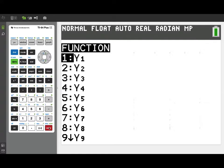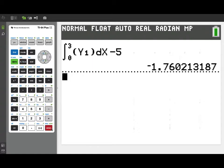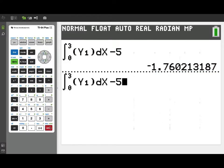I'll pull our velocity function off the y variables menu, and then enter that as the integrand for our definite integral. So, there we've got the integral from 0 to 3 of y1. We'll integrate with respect to x, which is what we're using for the independent variable, and to incorporate the initial position, we subtract 5, and there's our final position at time t equals 3. It's negative 1.760.